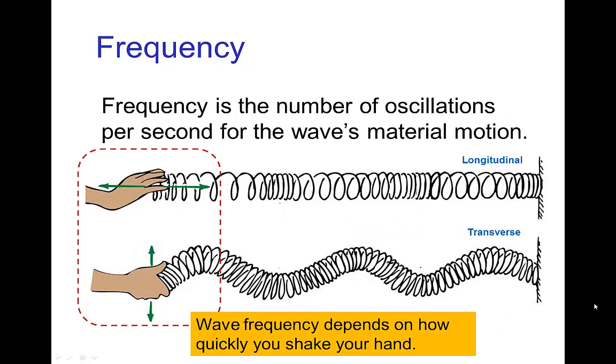The frequency is the number of oscillations per second of the waves material motion. So, if we have waves that we're generating on a slinky, if we're generating transverse waves, then the frequency that we're shaking up and down is the frequency of the waves.